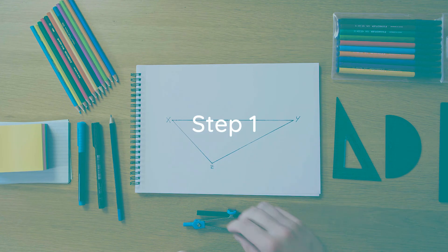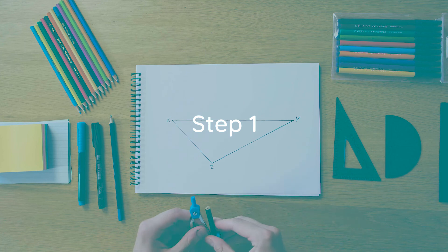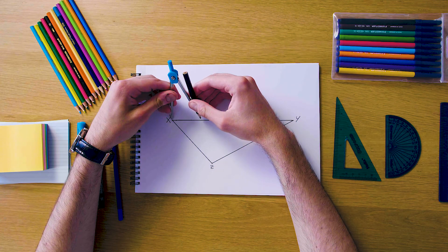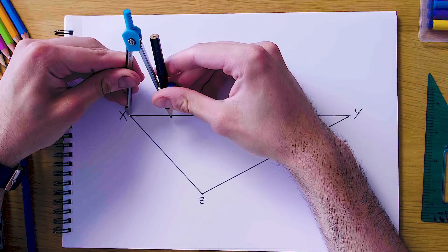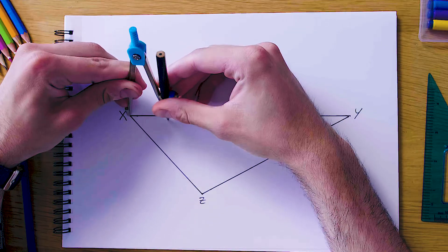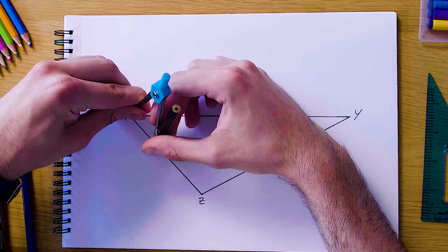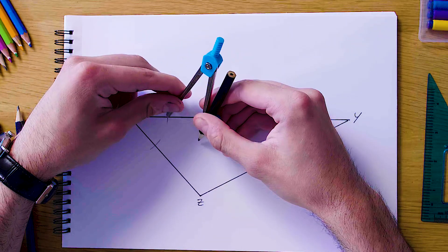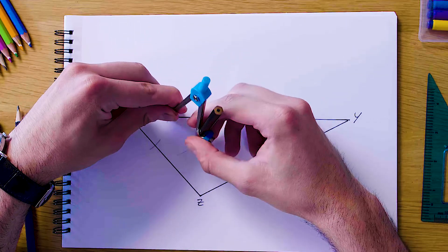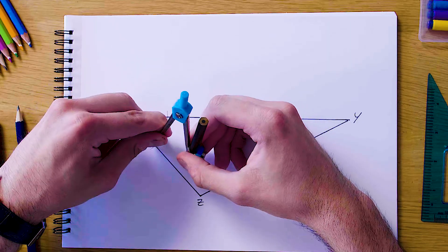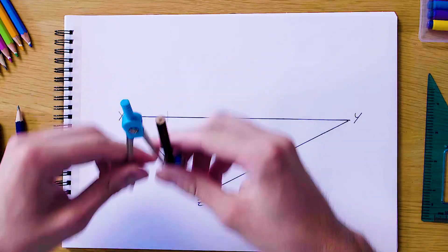Right, so our first step here is going to be to bisect any two of the angles. The first angle we're going to bisect is over here at X. So to bisect this angle, we're going to swing an arc which cuts both the sides surrounding this angle. We're going to cut it here and here, and then from these two new intersections we're going to draw two more arcs out in the middle of the angle which cross in the middle like this.